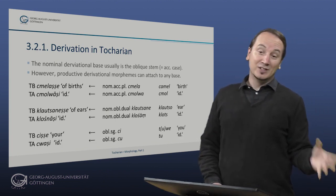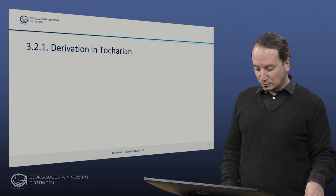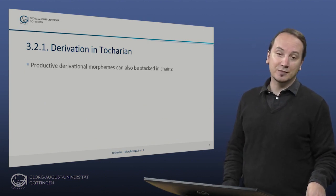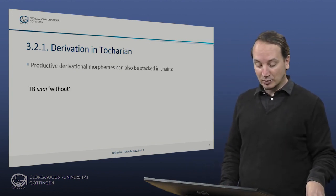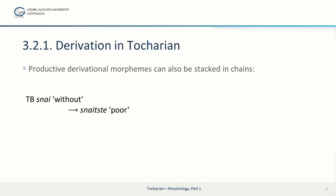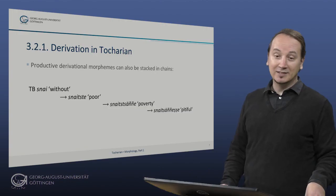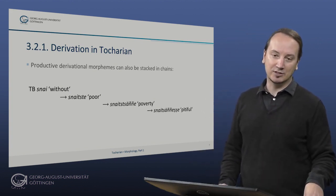Productive derivational morphemes can also be stacked in what looks like chains — derivational chains. For example, taking Tocharian B 'snei', the preposition meaning 'without', we can derive the adjective 'sneitze' meaning poor. From that we can derive 'sneitzünje' meaning poverty. And from that in turn we can derive 'sneitzünjesche' meaning pitiful. Here are some passages exemplifying each step in this derivational chain.